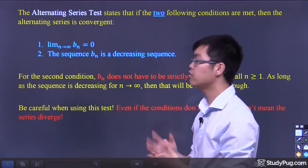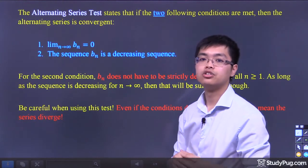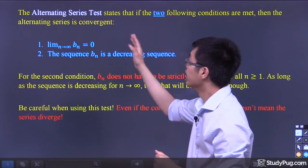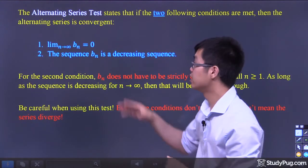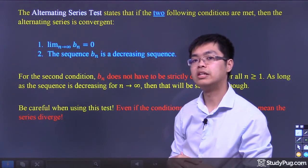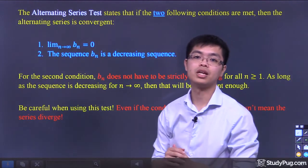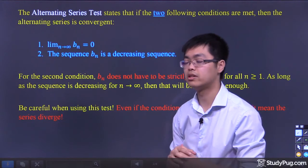There are several cases of it, but I'm not going to talk about it here. Just make sure that if your test fails, if the conditions do not meet, then don't just automatically assume that this is a divergent series.